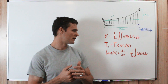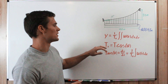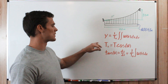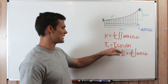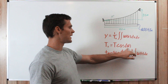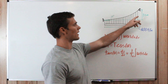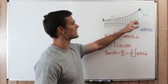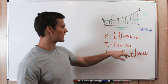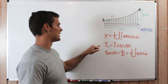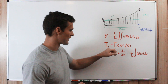We need to solve for the maximum tension, which we can find using a tension equation that gives us the tension at any given angle theta. The maximum tension is going to occur where theta is highest, which will be up at the support. So we need to find what that angle theta is and what the horizontal tension in the cable is.